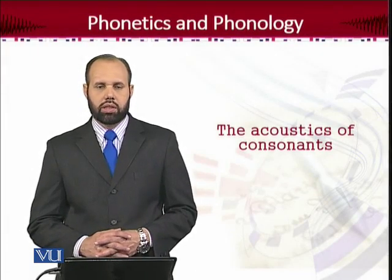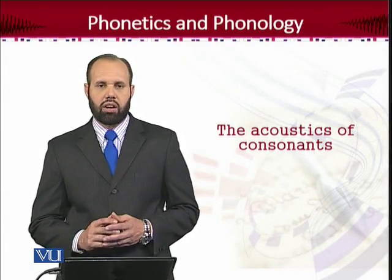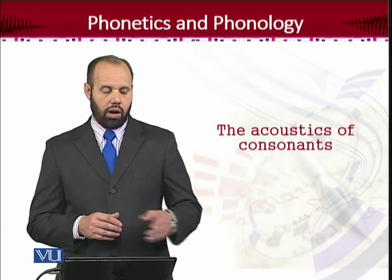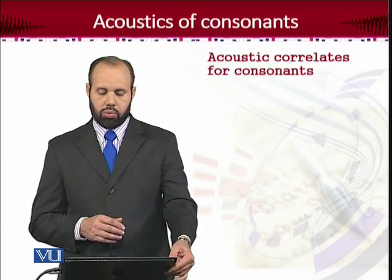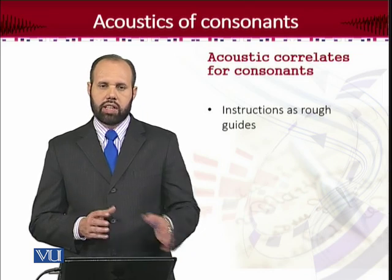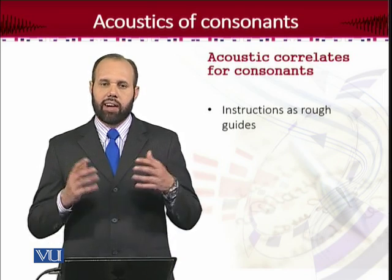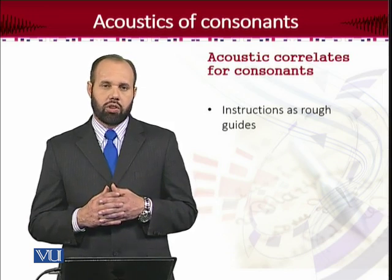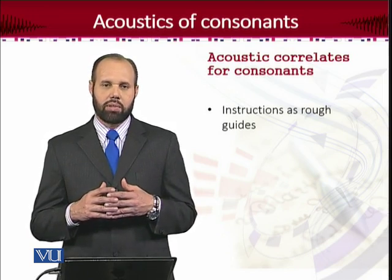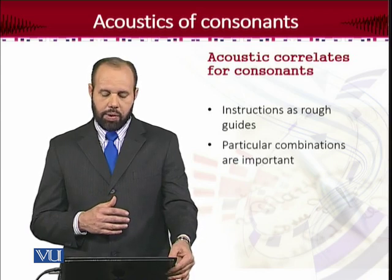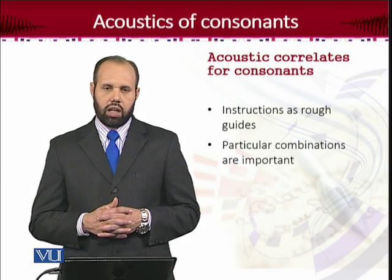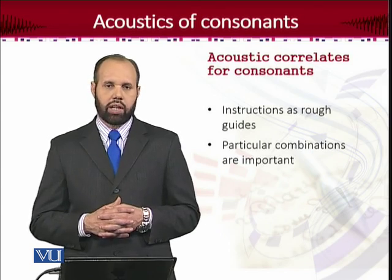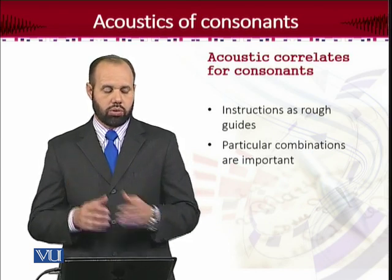We talk about acoustics of consonants, and it's now the time to think of some correlates — some cues on the basis of which we can predict which consonant sound it is and how the sound is shown through various features. But remember that these are just guides. These are the correlates which can give us some hints to predict the speech sound, which type of consonant it is. They do not give us clear-cut directions. The consonant sound is the product of contextual particular combinations of the vowels, and those contextual combinations are really important in addition to these guides.